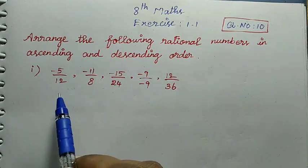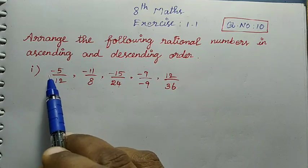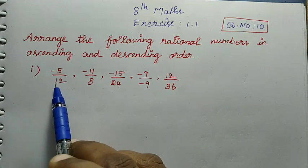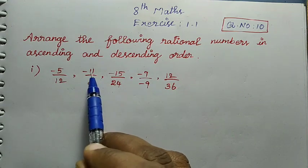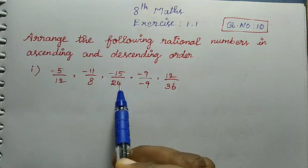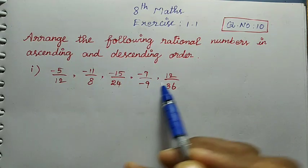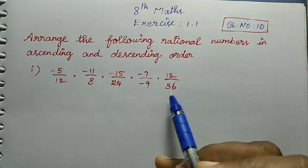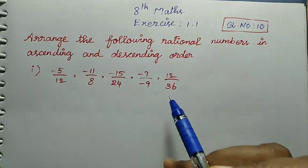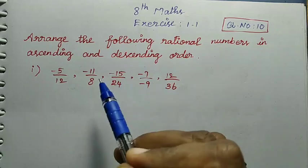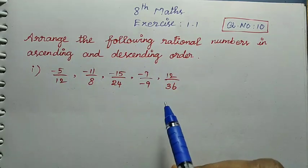Here are 2 divisions. The first division is: minus 5 by 12, minus 11 by 8, minus 15 by 24, minus 7 by minus 9, and 12 divided by 36. So, we need to arrange these in ascending and descending order by comparing the rational numbers.